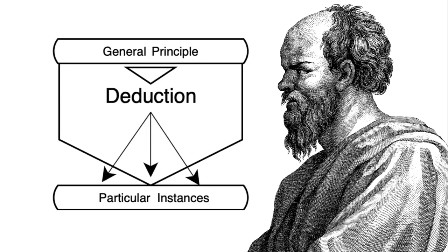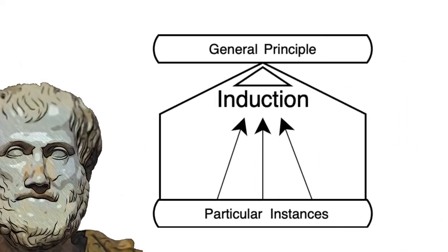Deduction can be thought of as top-down thinking, where the starting point is a universal statement widely believed to be true, and we reason downward towards particular inferences that follow logically. Induction is almost the opposite as bottom-up thinking, where we start with particular observations and infer a more universal statement of truth that logically follows from those observations.